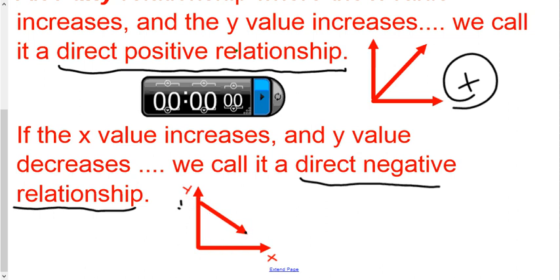So to distinguish them: which way is the line going when you look at the right end? If the right end of the line is going up to the right, it's positive. When it's going down to the right, it's negative. With a table, if the x value increases and the y values decrease, we call it negative. If both go up, we call it positive. If the y value goes down, we call it negative.